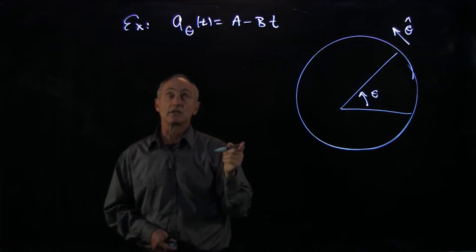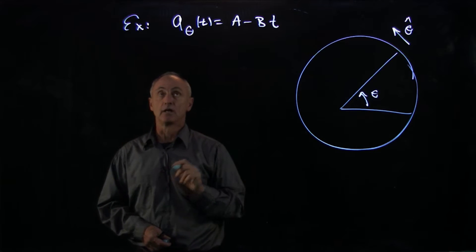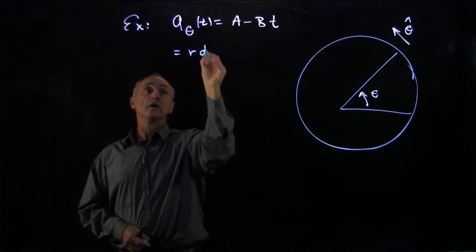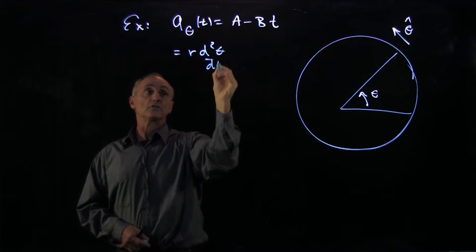Suppose we're given that the tangential component of the acceleration is given by some simple polynomial, A minus Bt. Now, in this case, the acceleration is certainly non-constant. What we'd like to do, remember, this is equal to r d²θ/dt².